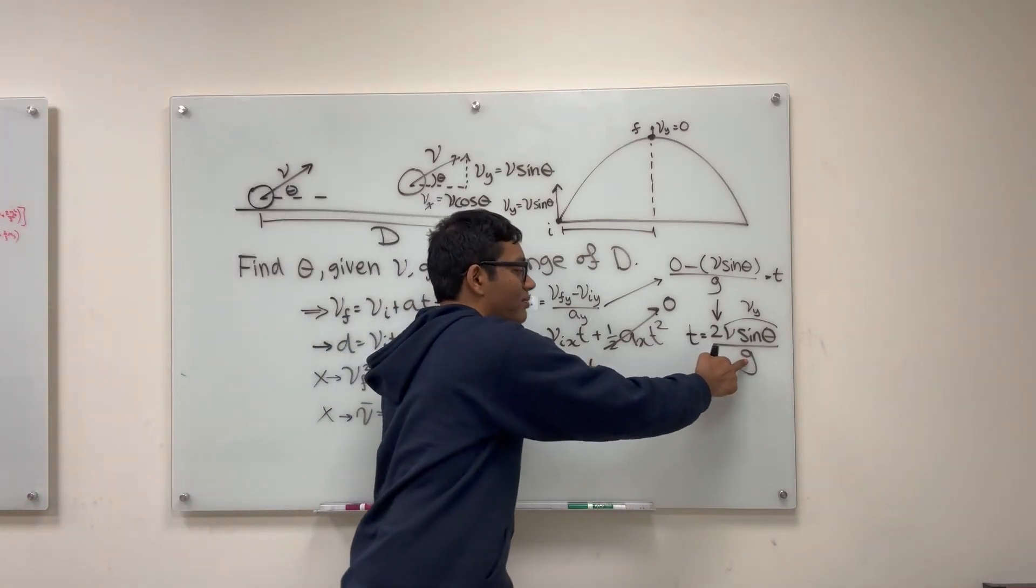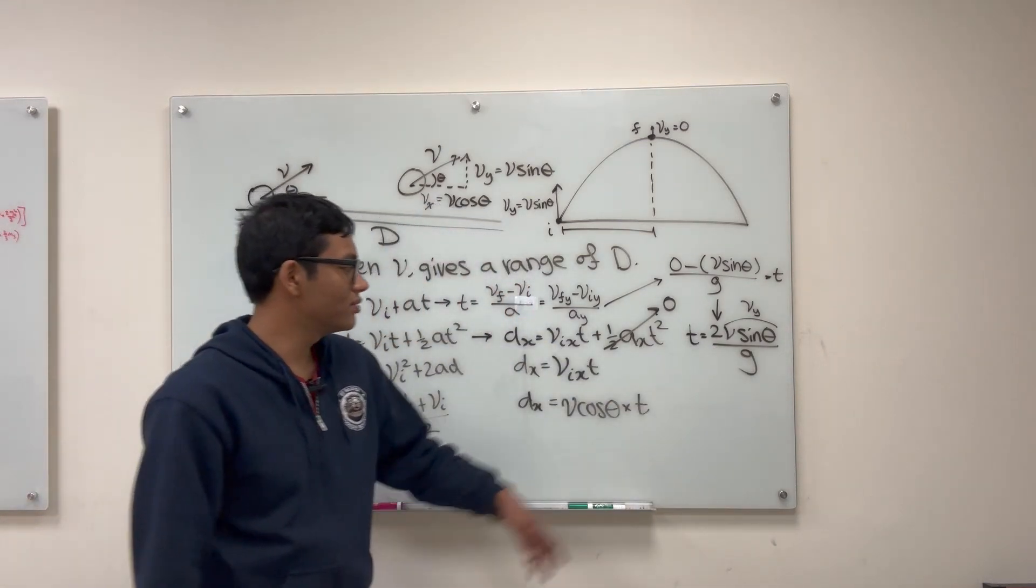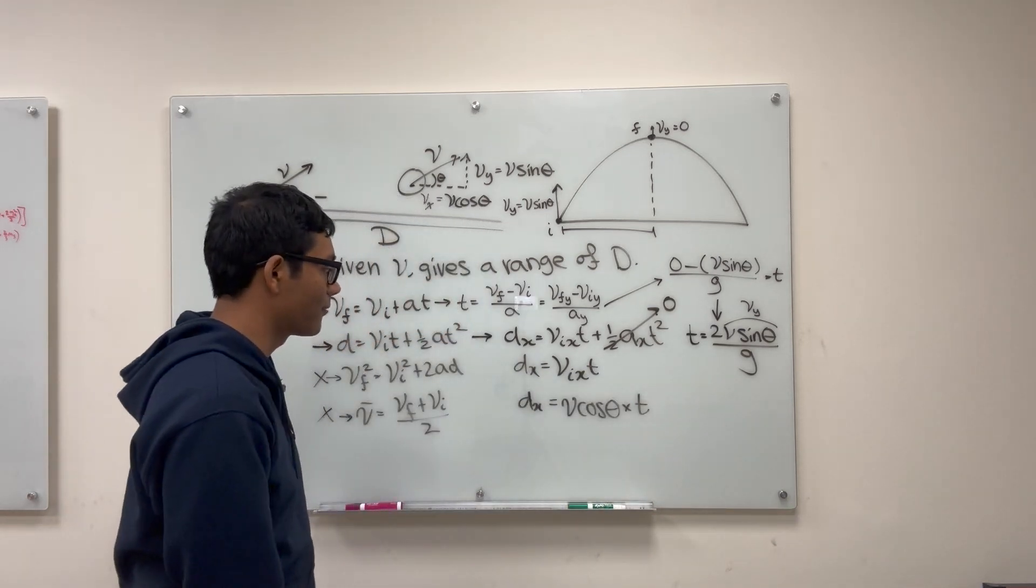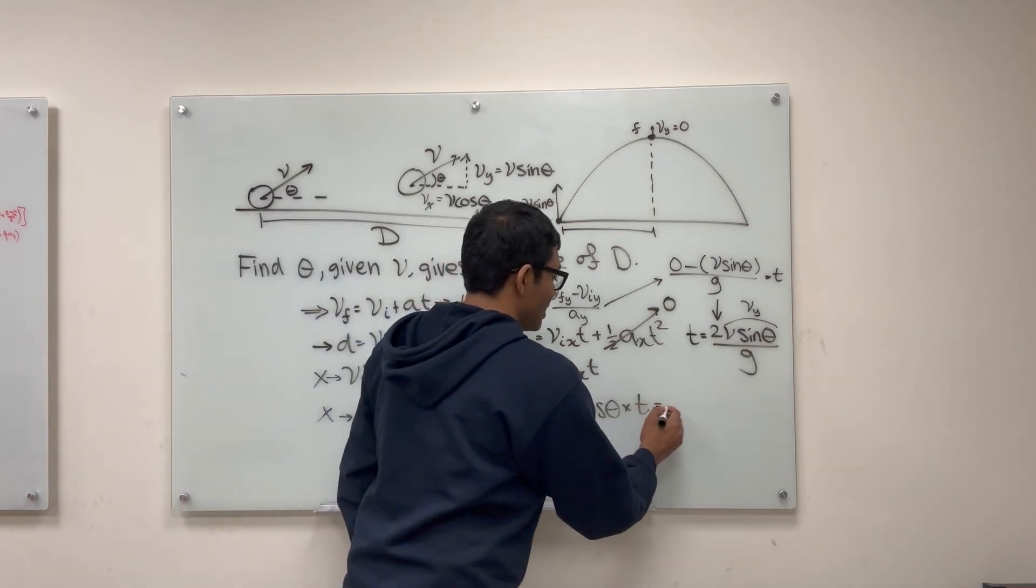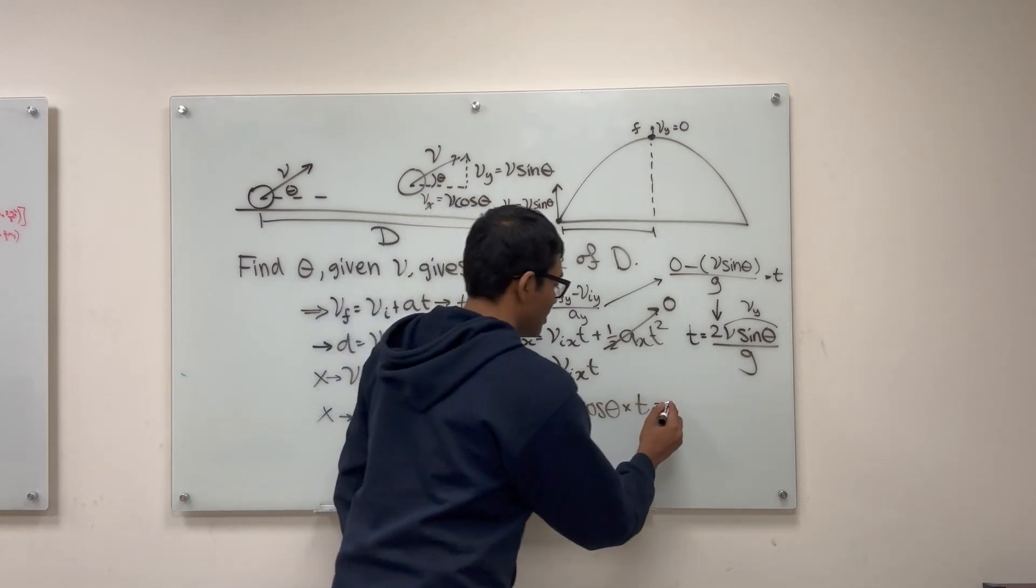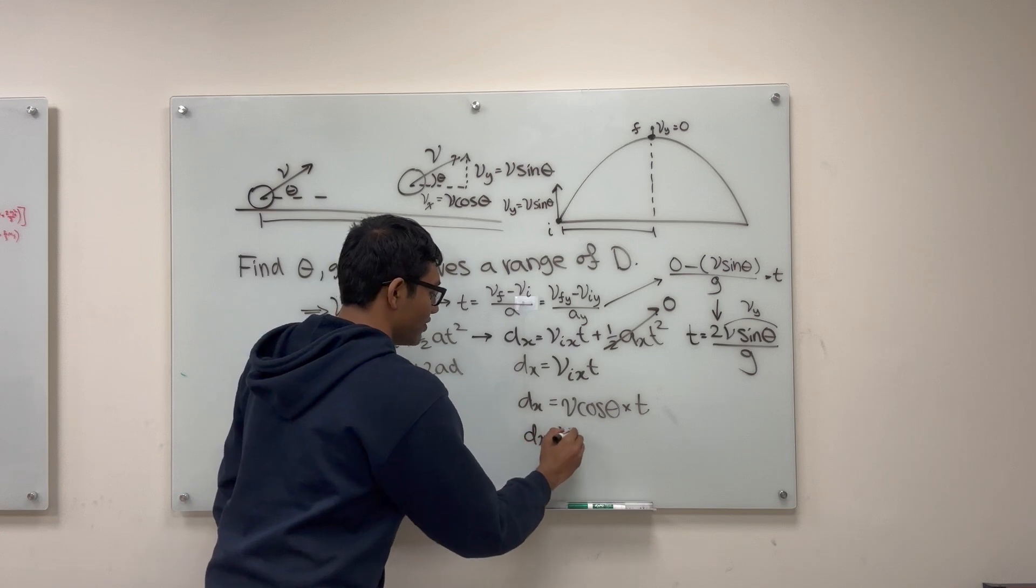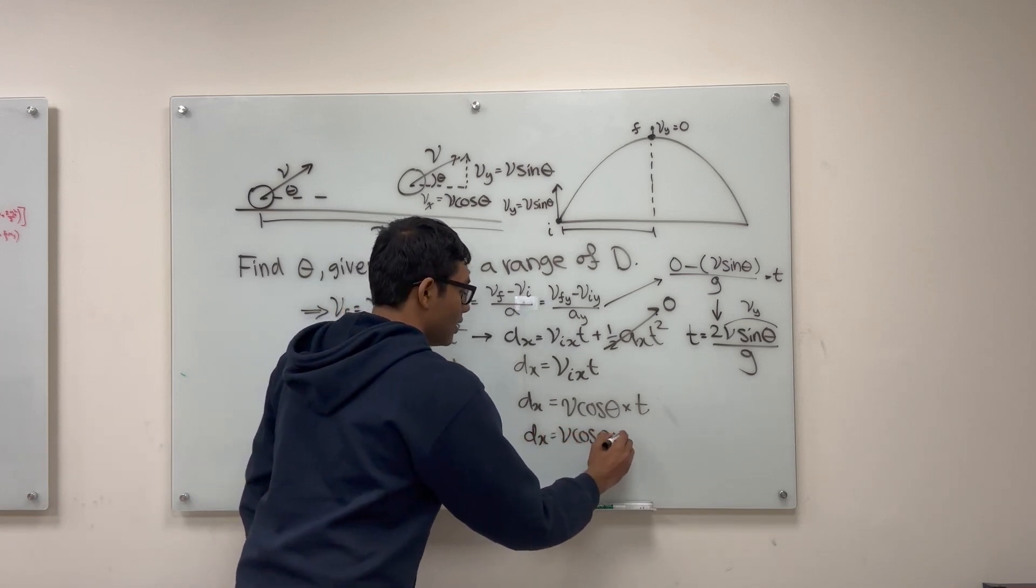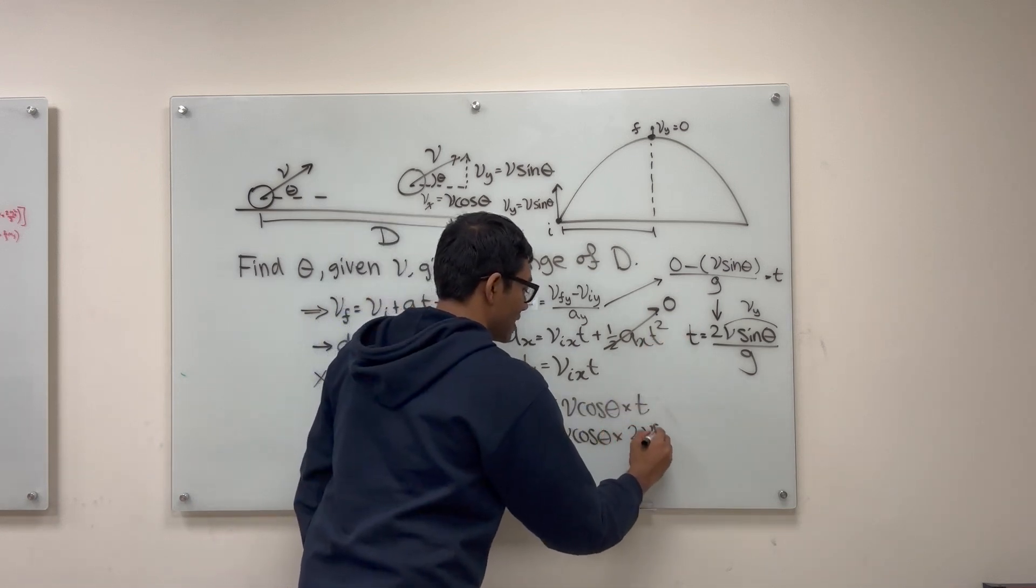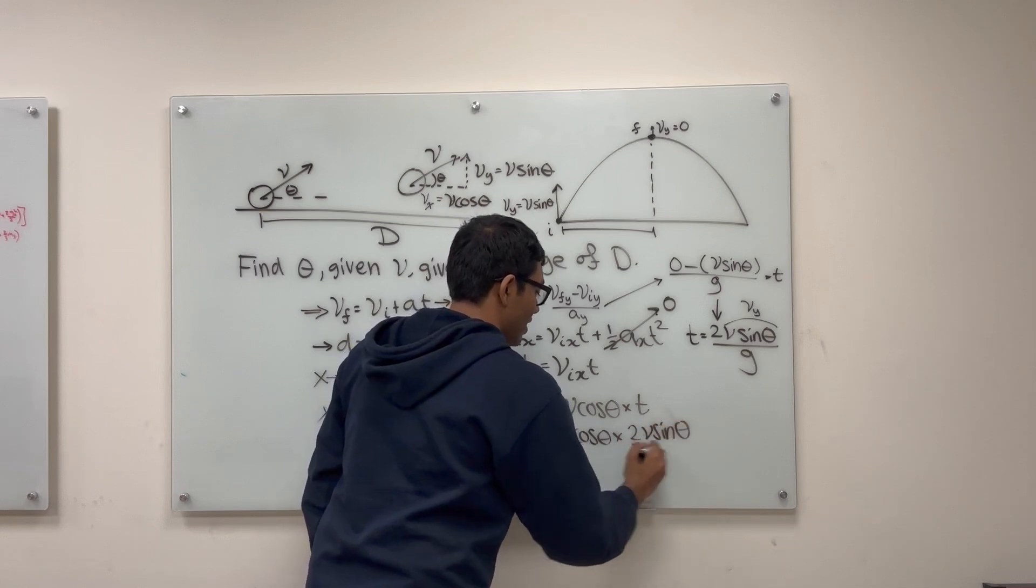And you can see if we were on a heavier planet like Jupiter, the airtime would be reduced because gravity would be stronger. So now we can plug in the time that we calculated over here for t. So let me go ahead and do that.